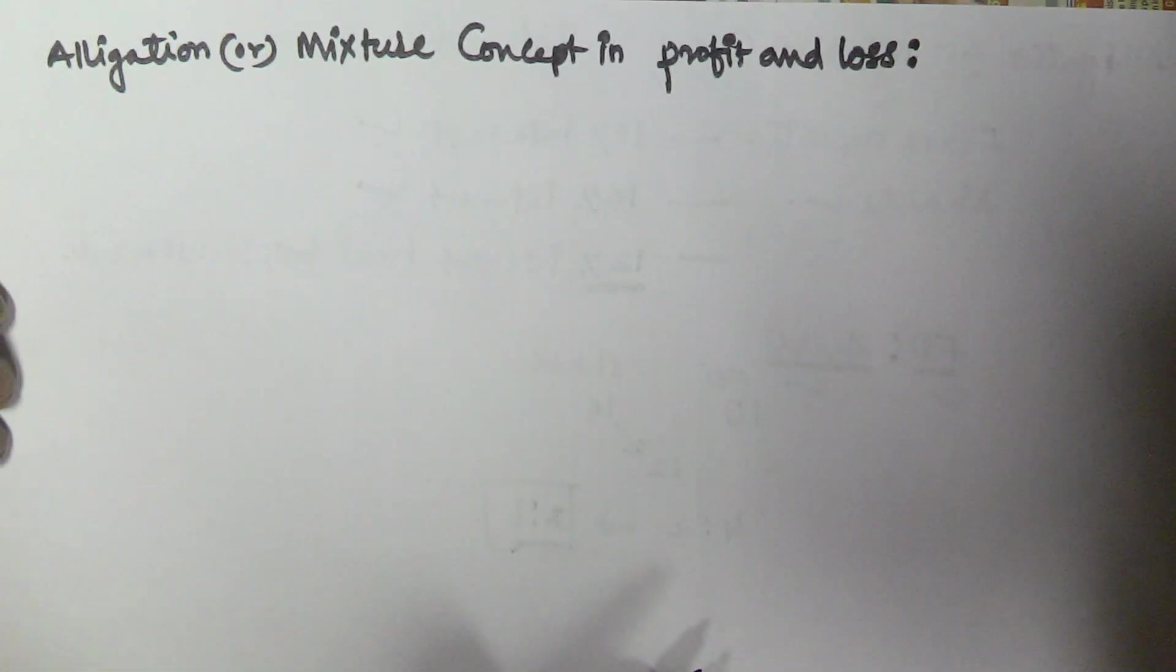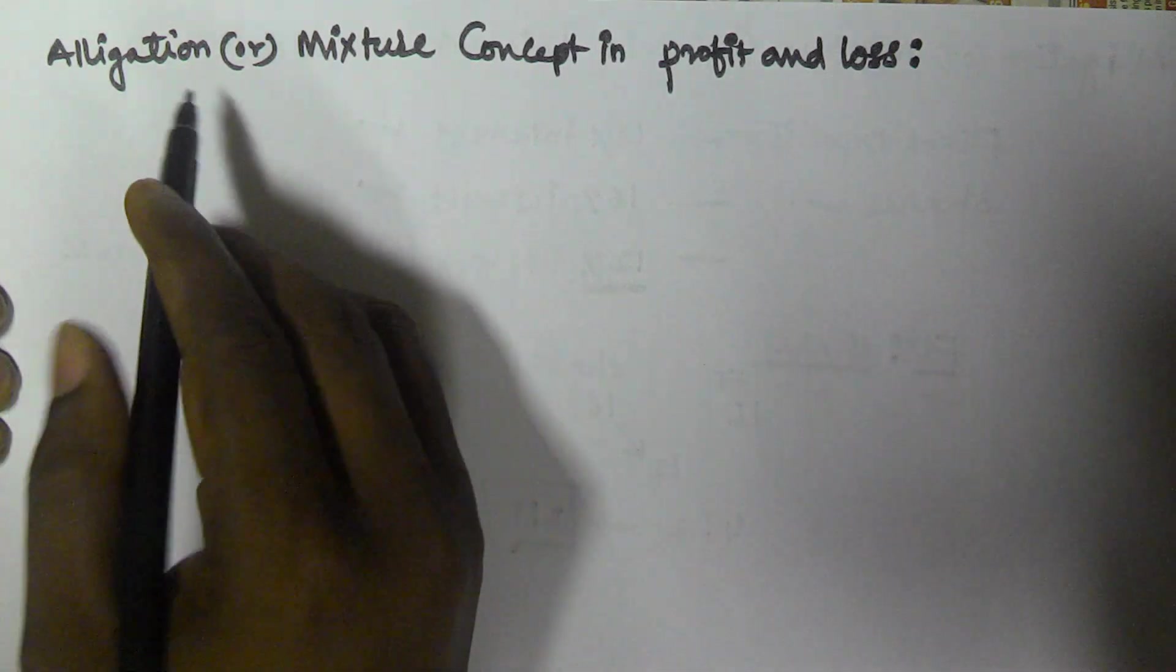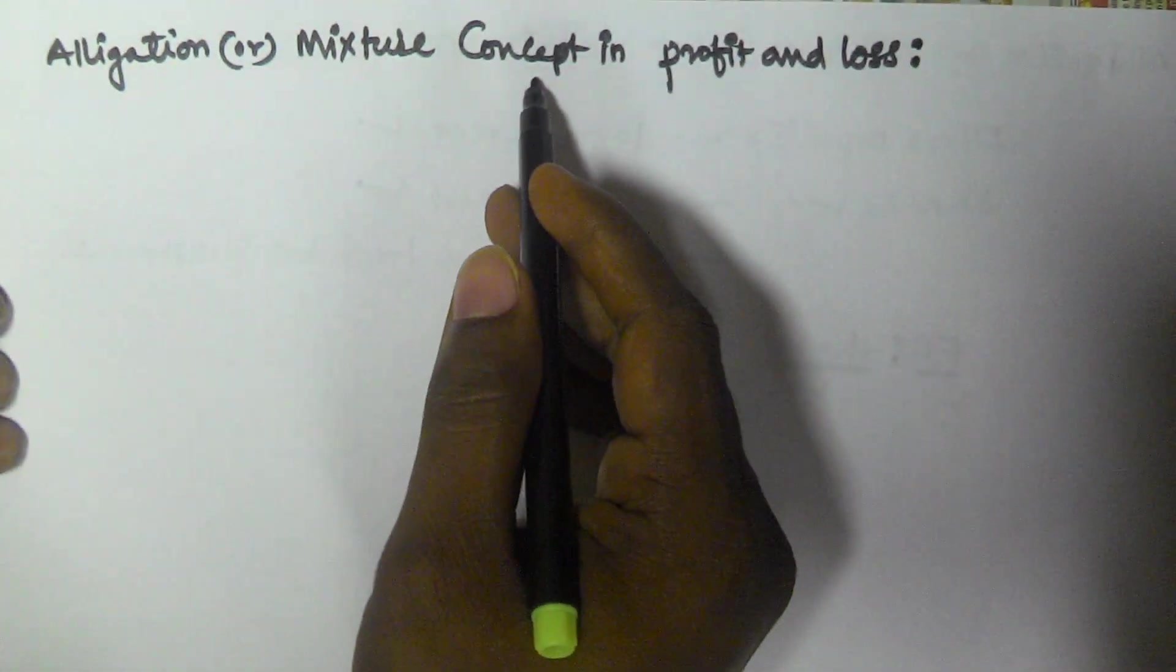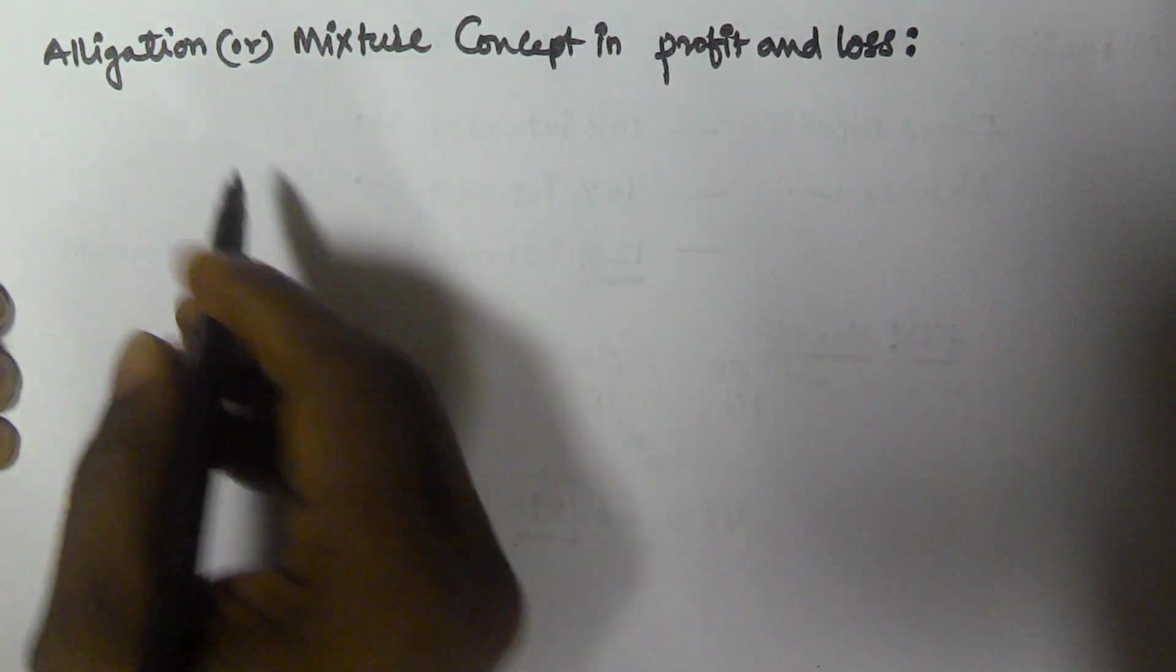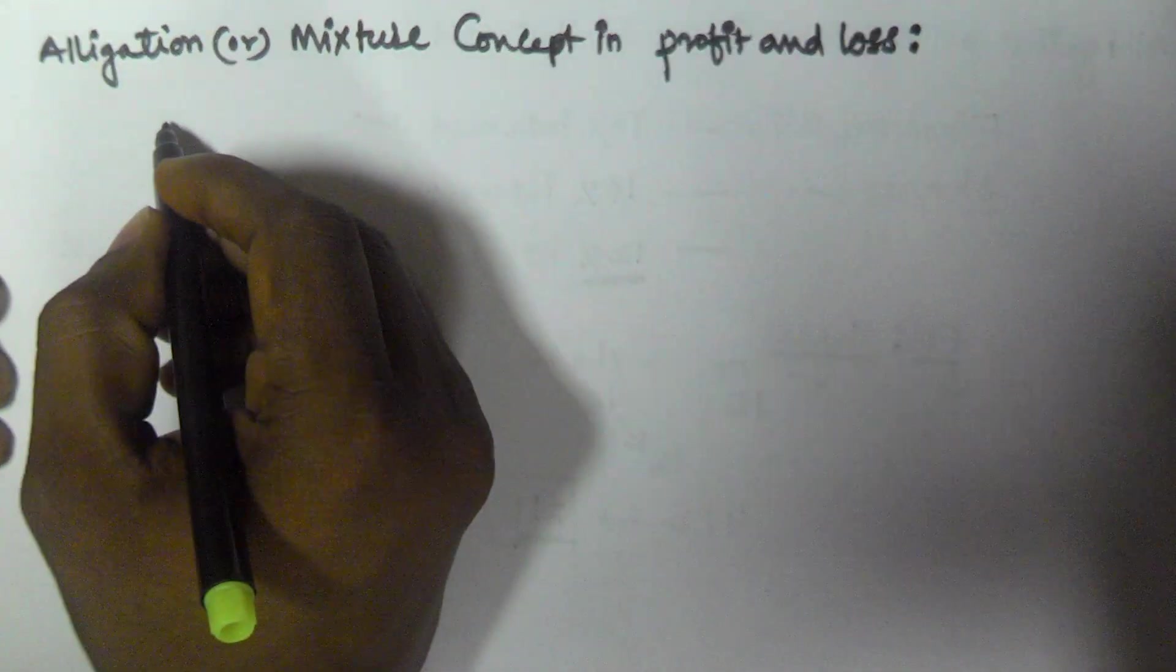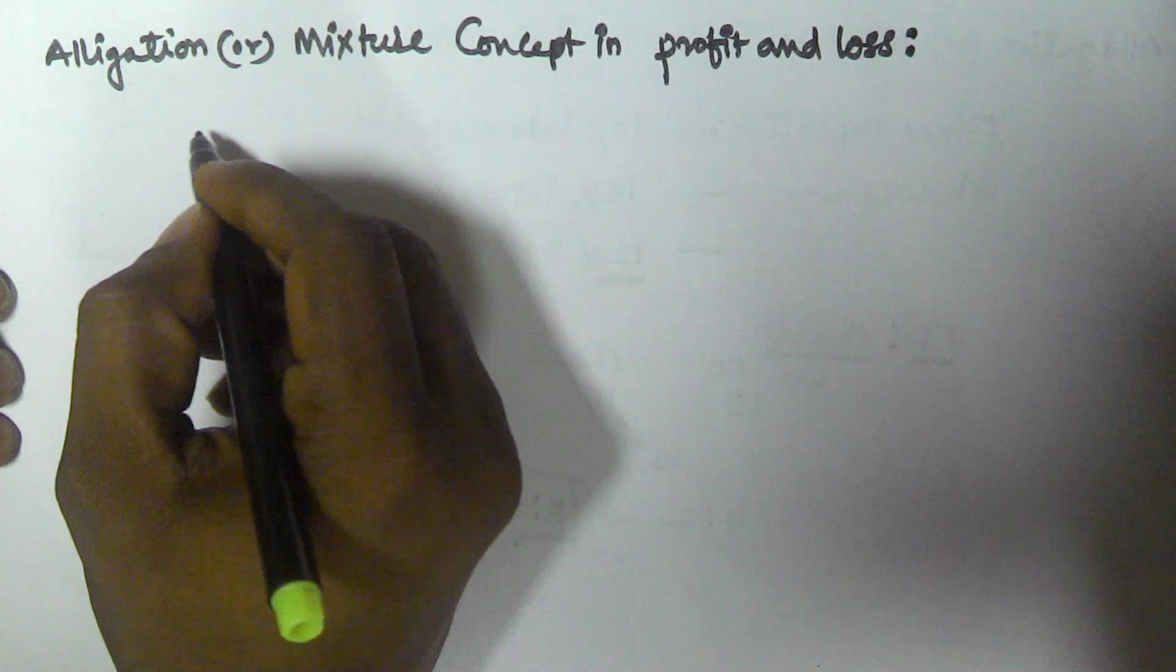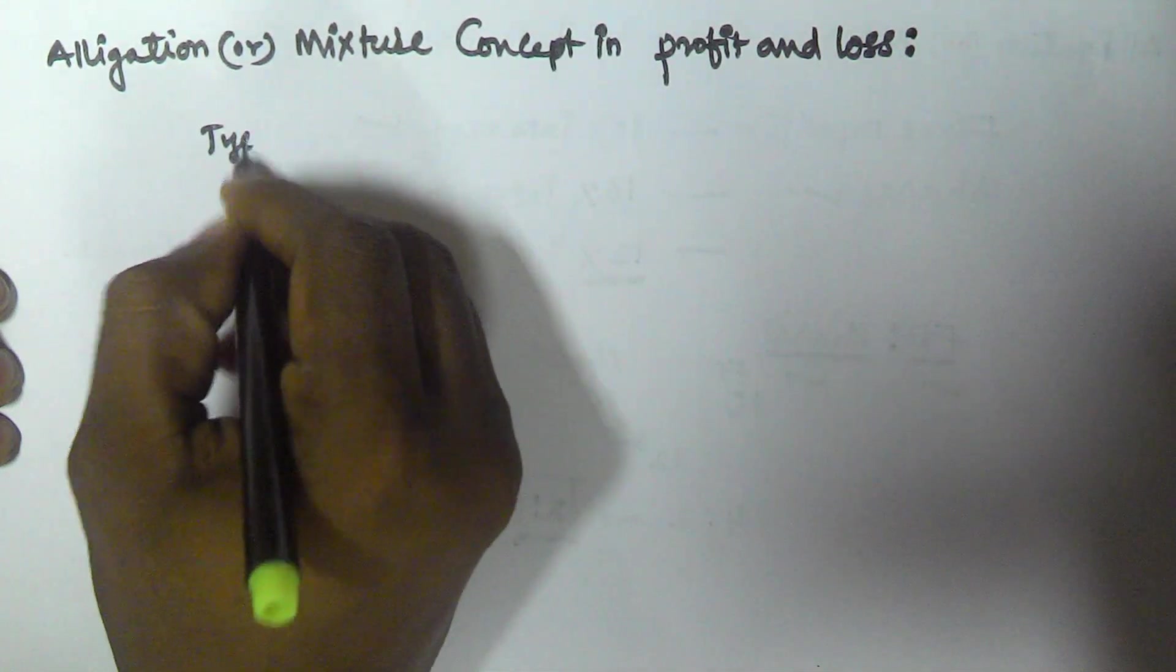Hello friends, in this video I will show you an example of how we can use the allegation and mixture concept in profit and loss related questions. Let us assume a person contains Type 1 rice.